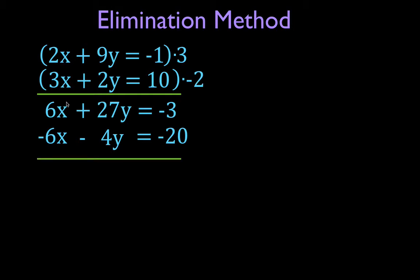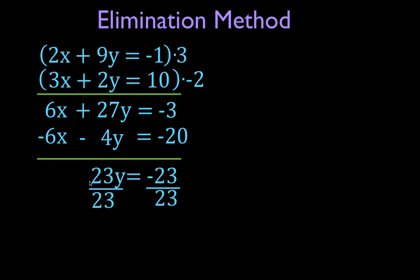I draw a line underneath and add them up. I can see 6x and minus 6x — I add these and get 0. Then 27y plus minus 4y gives me 23y, and adding the constants gives minus 23. So I have 23y equals minus 23. I divide both sides by 23 and get that the y value is minus 1.